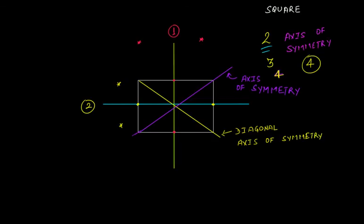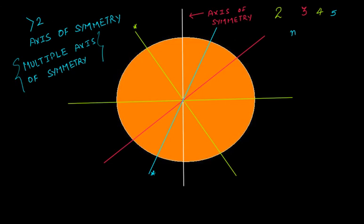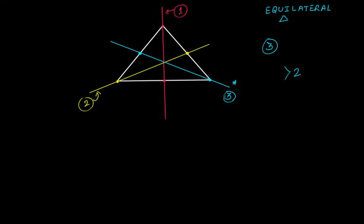But in the case of a square, you'll have four — that is, a square actually has multiple axes of symmetry, similar to what we discussed in the case of a circle. Triangle, square, and circle are figures having multiple axes of symmetry, that is, greater than two axes of symmetry.